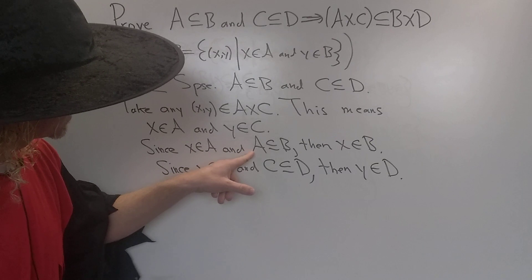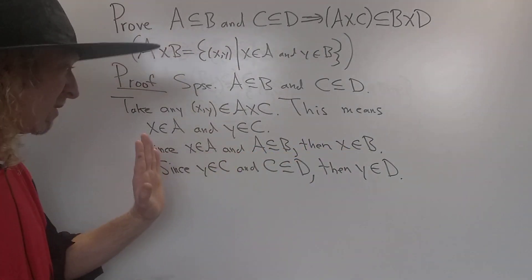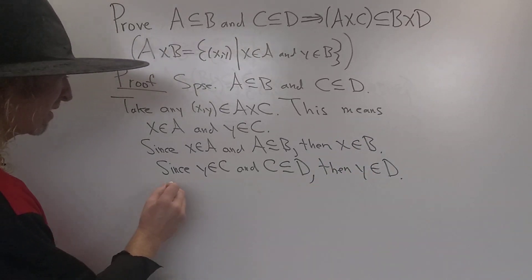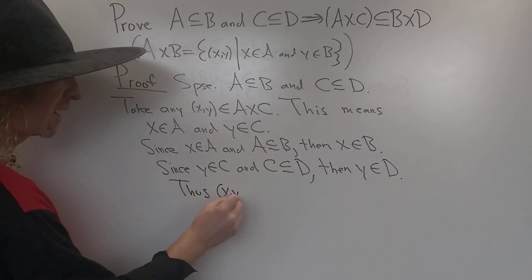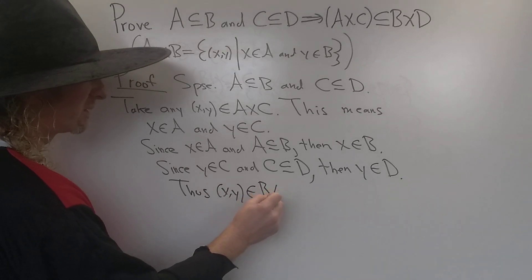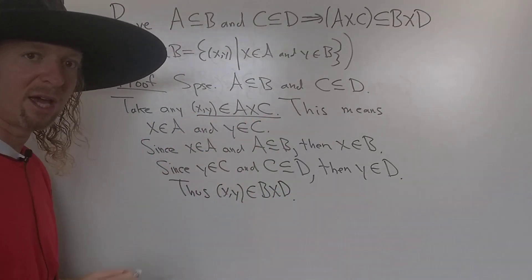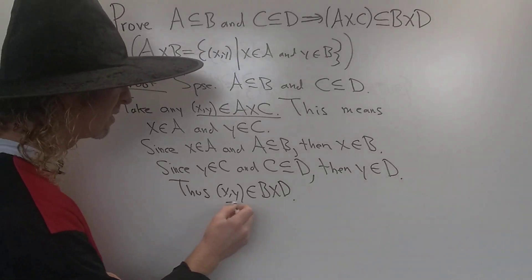Alright, so since X is in A and A is a subset of B, X is in B. Since Y is in C and C is a subset of D, Y is in D. So we have X in B and Y in D, thus X, Y is in B cross D. So we started with an element in A cross C, and we showed that it was in B cross D.